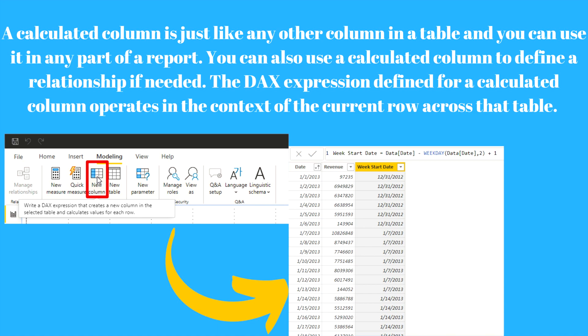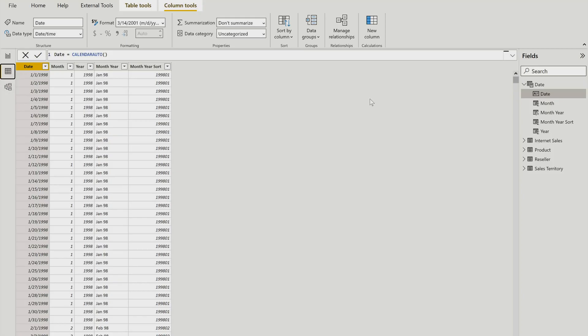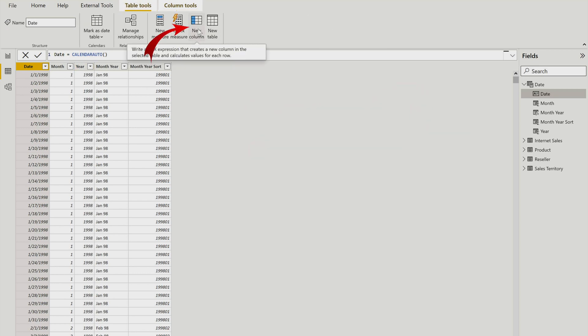Let's head over to the demo for calculated column. Here is my demo PBIX file and I have some data. You can see I have date table, internet sales table, product table, sales table, etc. You can use a calculated column in any of these tables. In this case, I'm going to format this date column into another format. To do that, you have to come under table tools and over here you would find this option 'new column', so click on this.